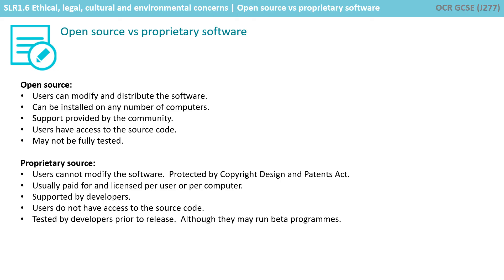In addition to this, open source software is usually supported only by the community, and many modules may not have undergone thorough testing. Proprietary software may also have a community, but also tends to be supported much more heavily by the development company themselves.